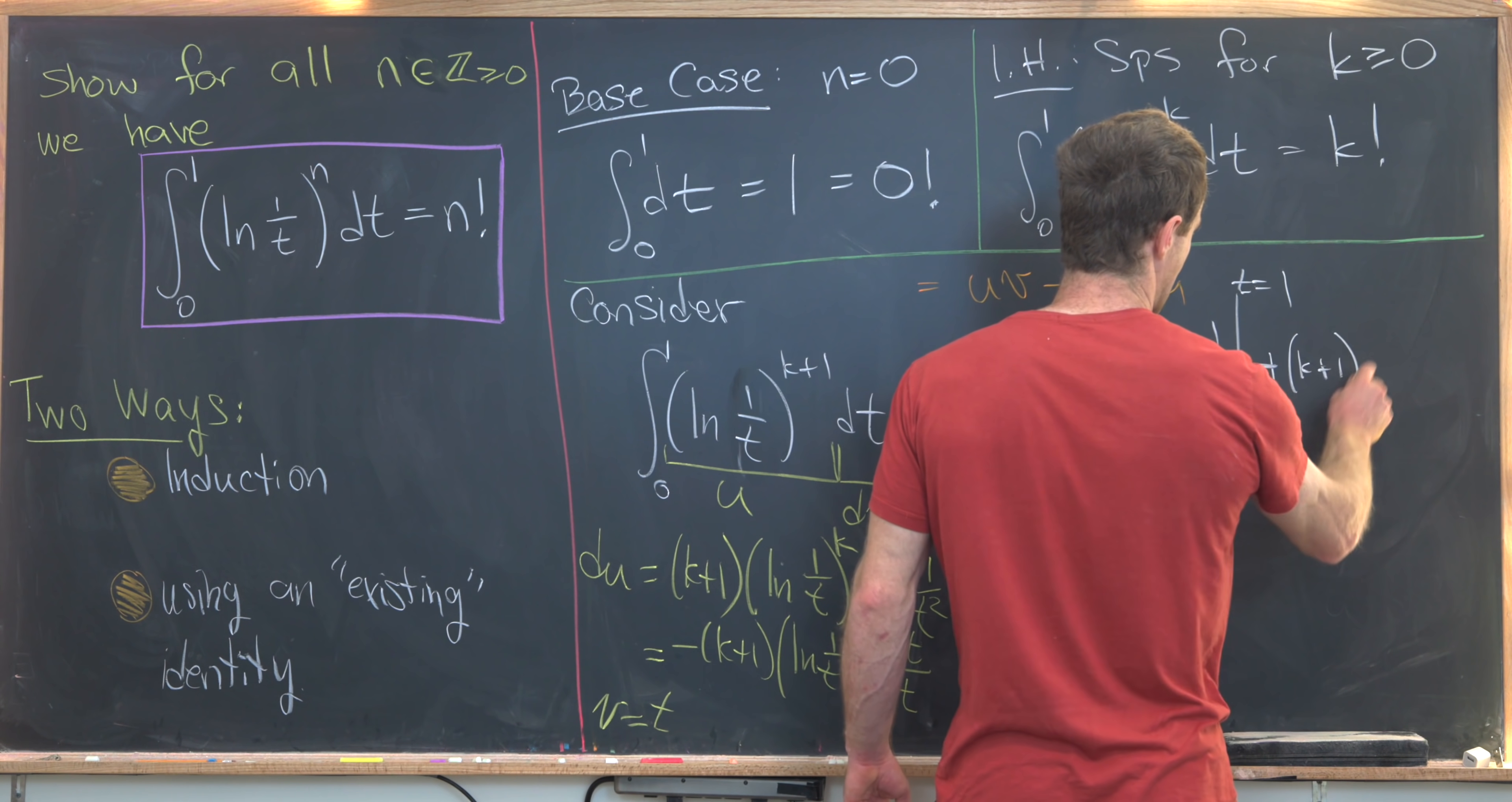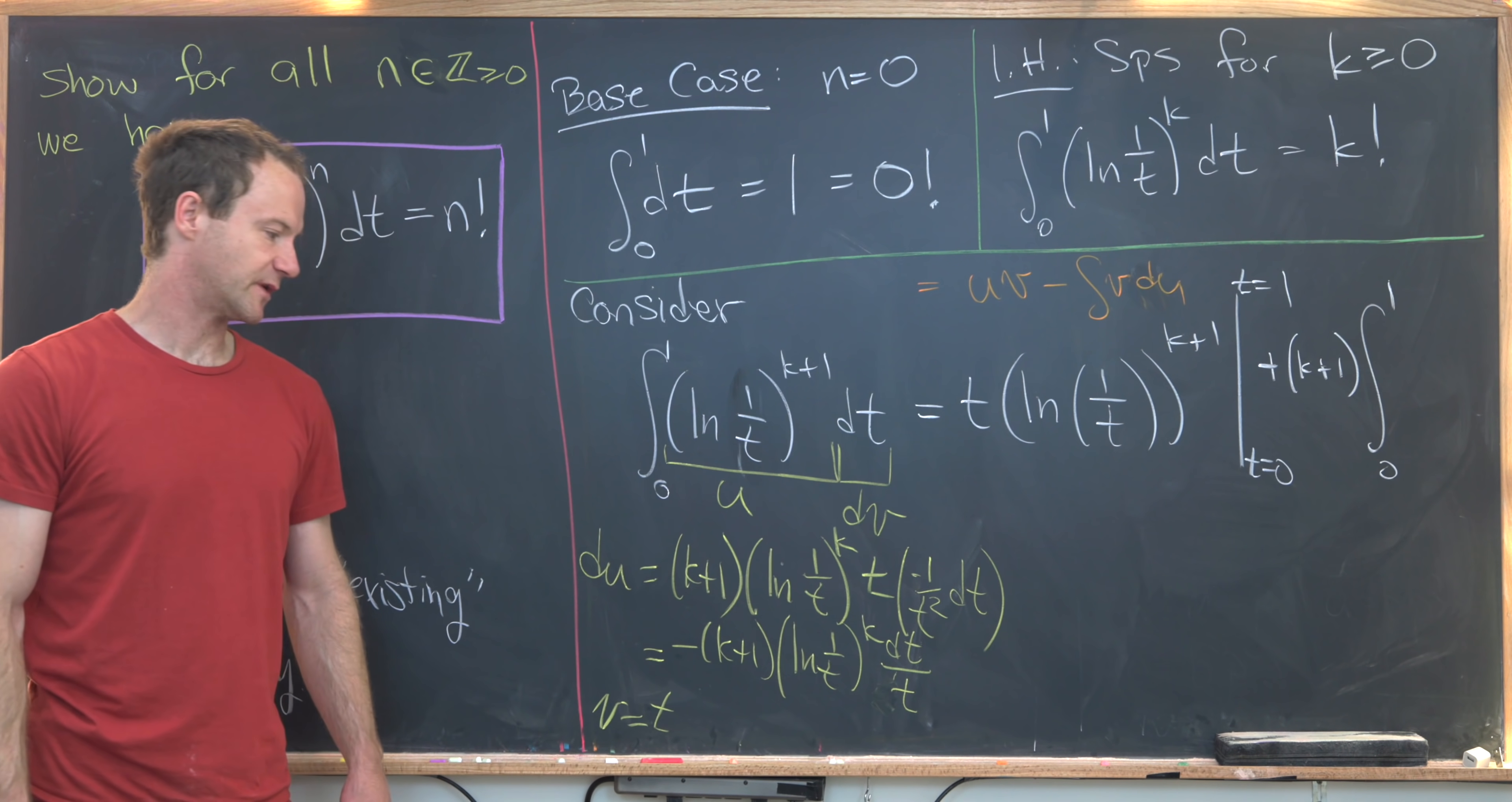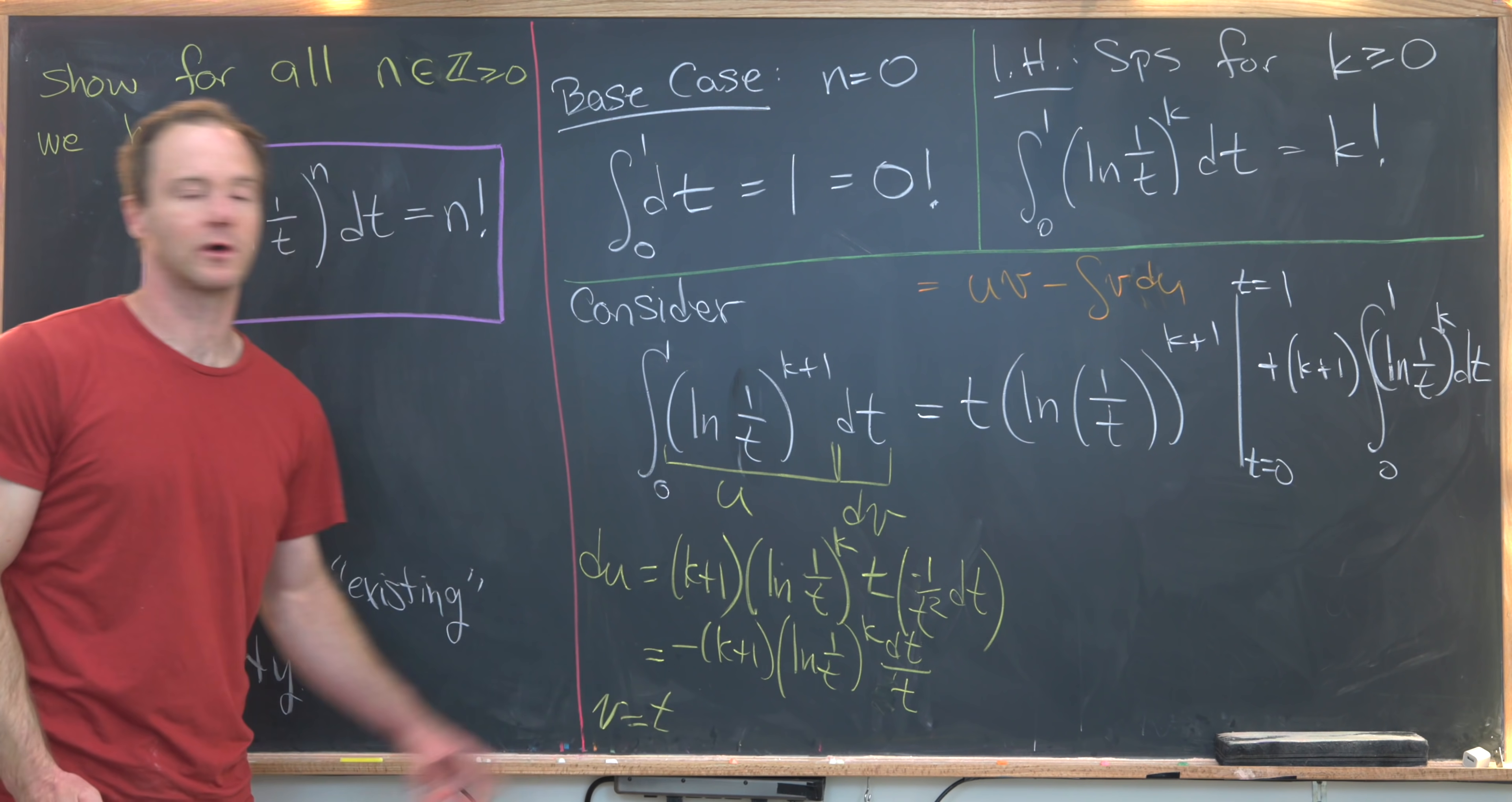I can bring that k plus 1 out front. Then I have the integral from 0 to 1 of, I've got v times the rest of du, but notice those t's cancel, and we're left with natural log of 1 over t to the k. So we have natural log of 1 over t to the k dt.